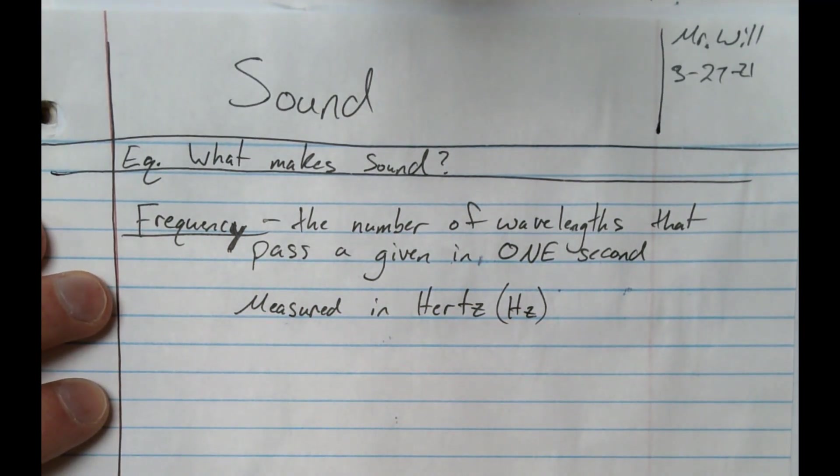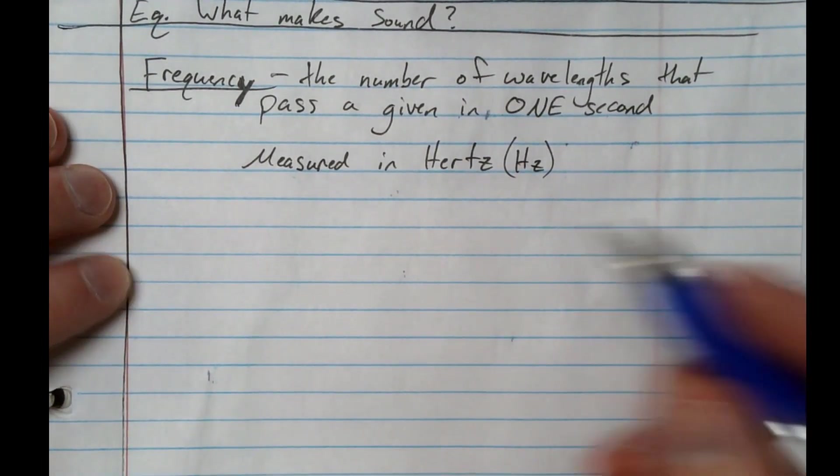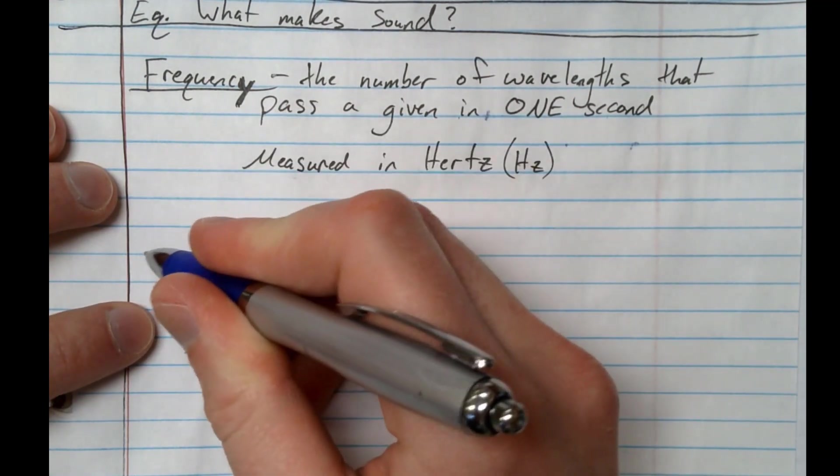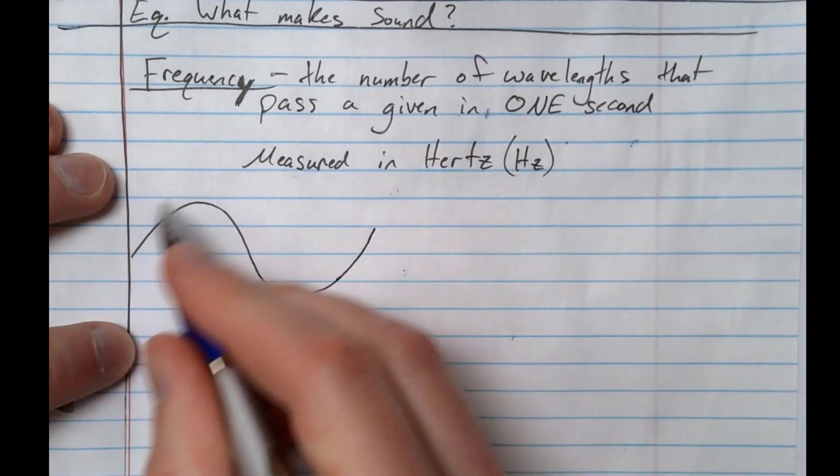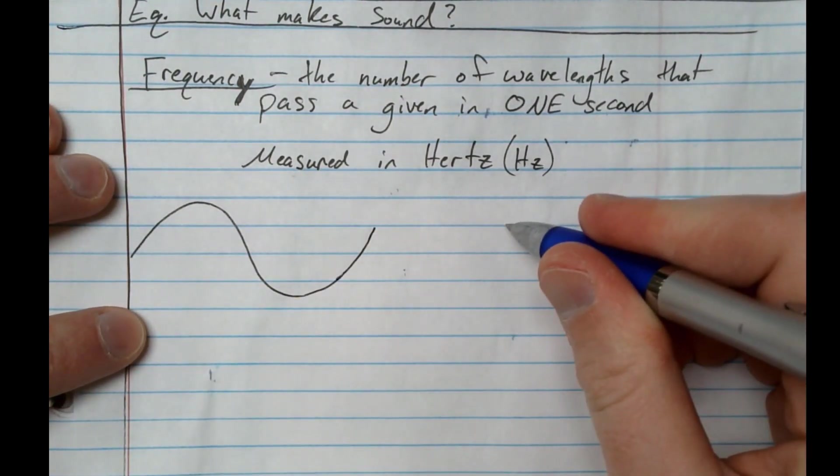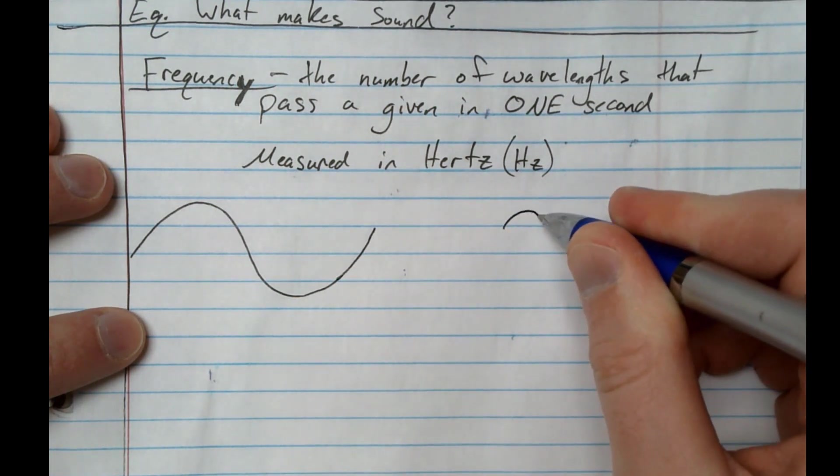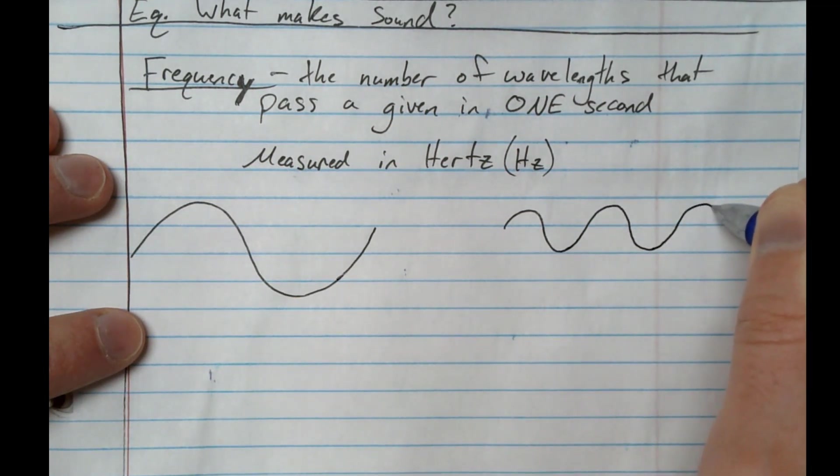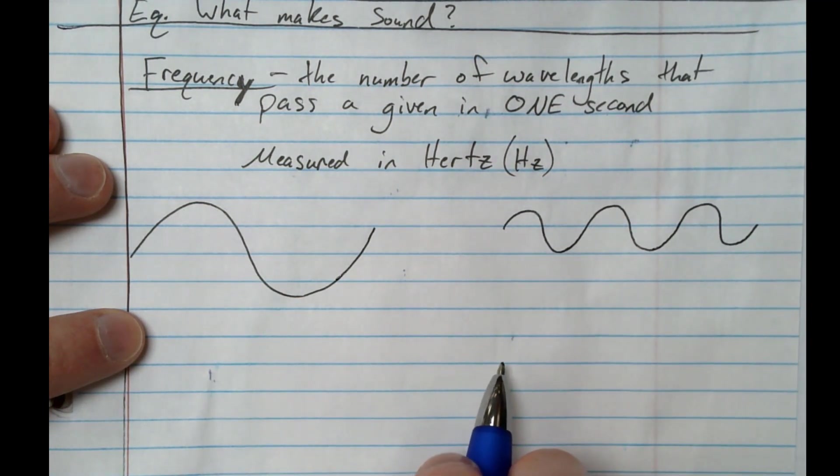Okay, so frequency. We're going to draw a quick picture. So we've got two different kinds of waves, or two different waves I should say. Okay, so we've got... So that's one wavelength. And that is three wavelengths.